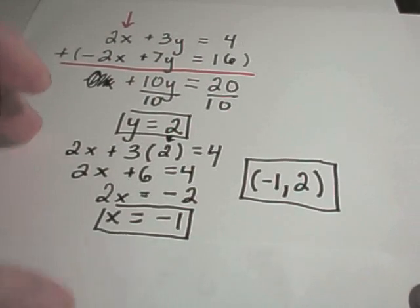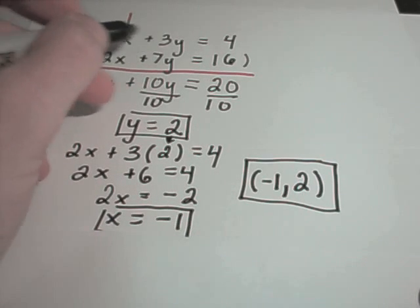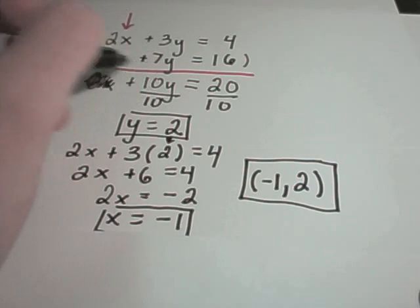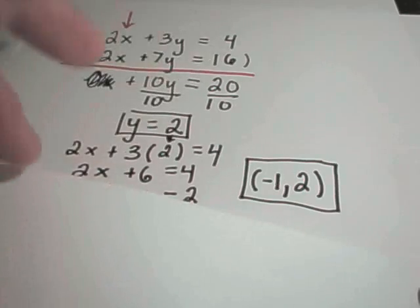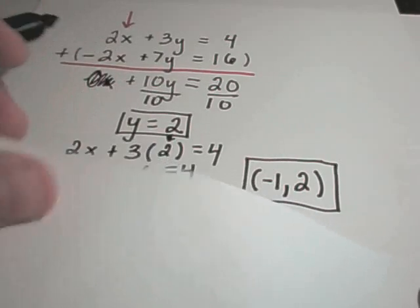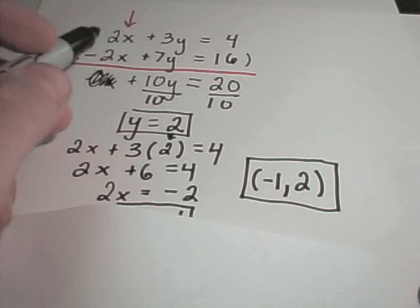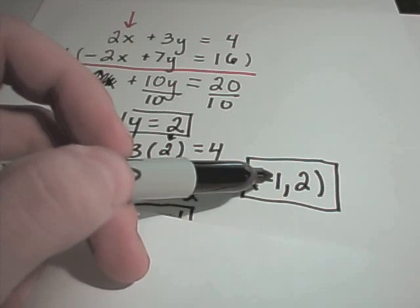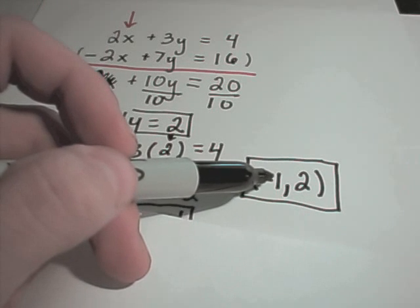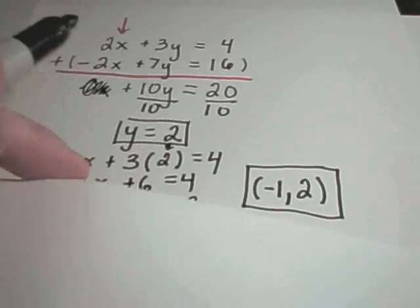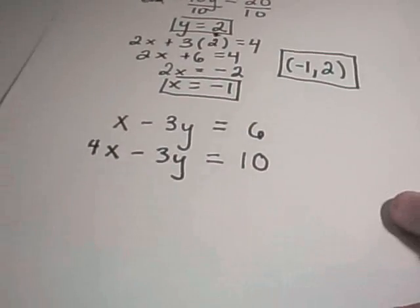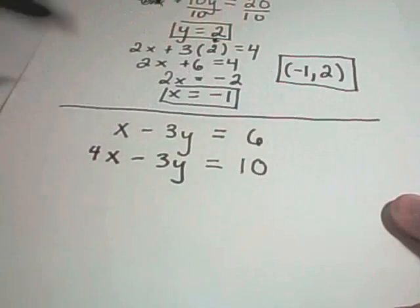And the idea is you can plug negative 1 in for x, 2 in for y. In the first equation, you'll get 4. In the second equation, you'll get 16. Again, graphically, if you were to put these lines on a graph, you would find that they are intersecting at the point negative 1 comma 2. Alright, so there's one example. We'll do a few more here.